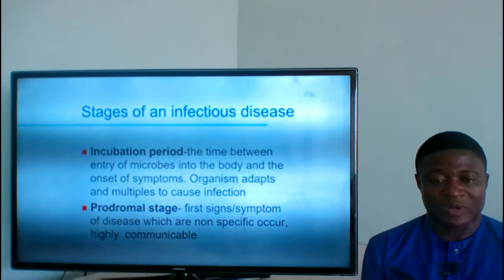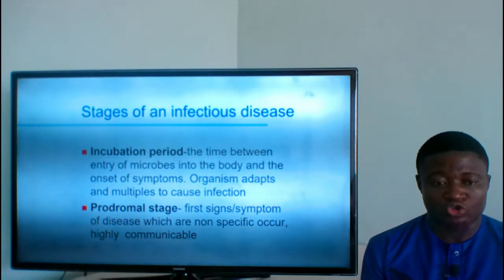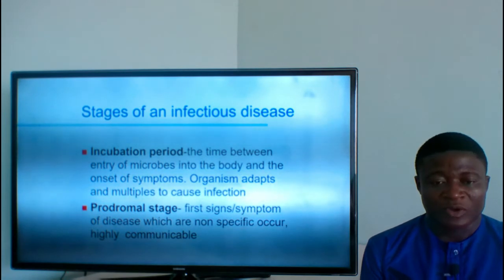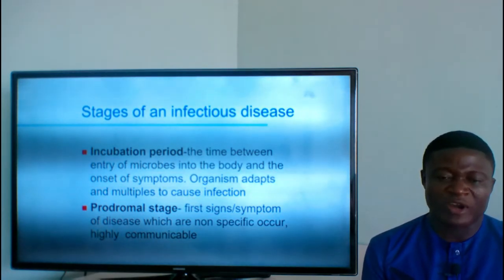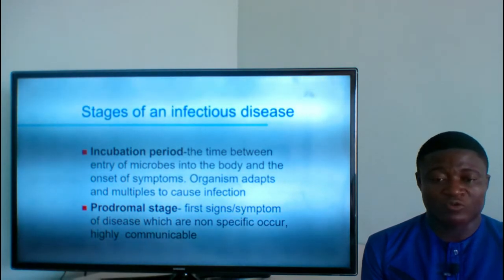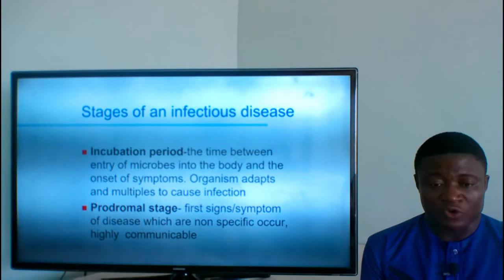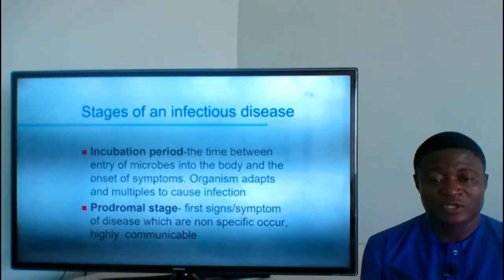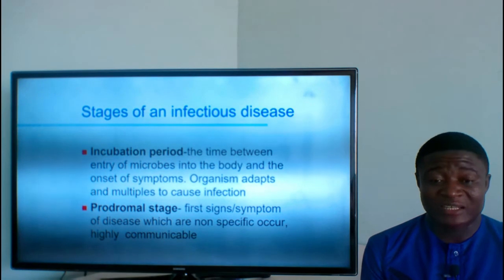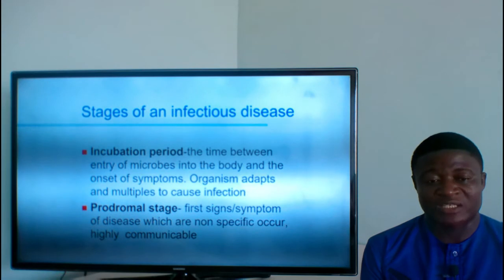Stages of an infectious disease: the first is the incubation period — the time between entry of microorganisms into the body and the onset of symptoms, during which organisms adapt and multiply to cause infection. For example, the coronavirus incubation period was about 14 days, which is why people were quarantined for that period. The organism enters your body but signs and symptoms don't appear until around two weeks later.